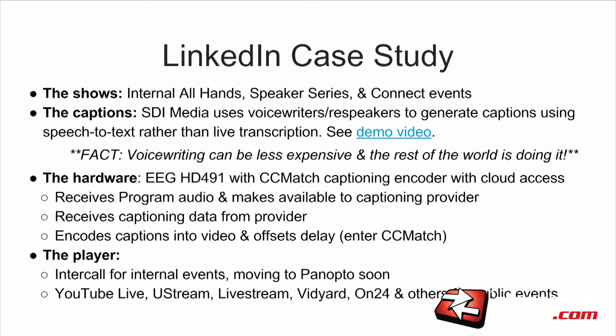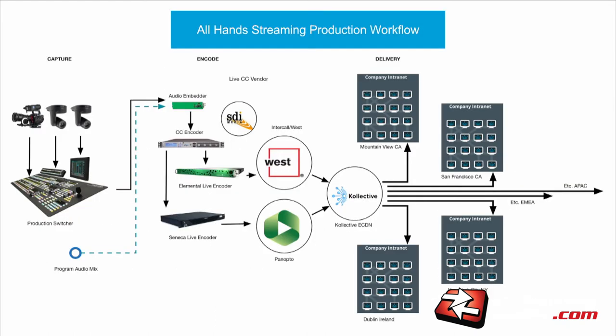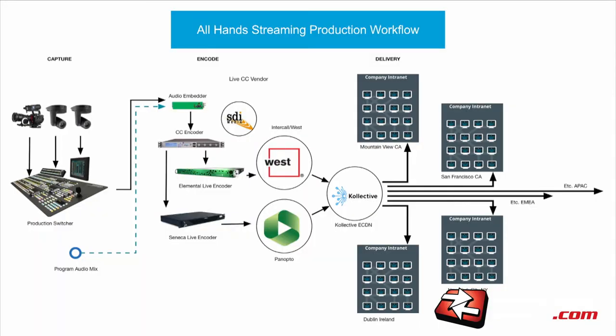The signal flow goes: production switcher through the captioning encoder, out through an elemental, then to our various distribution platforms. When we're working with YouTube, the elemental pushes right to YouTube and the captions come up with a closed captioning button the viewer can turn on and off. For some other solutions we have to use workarounds and do an open caption feed. The way it works is we send program audio into the iCap software, Jake's team listens and sends captioning data back through iCap to our encoder, and that gets added to the video signal.